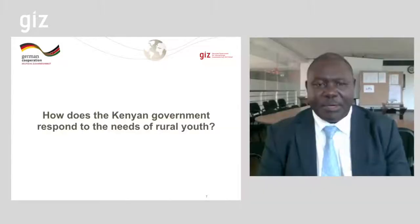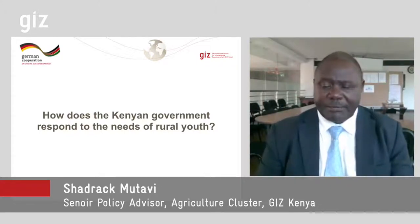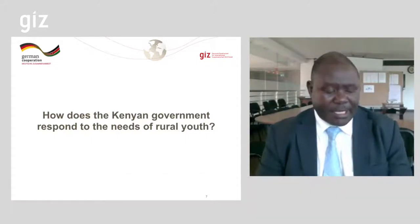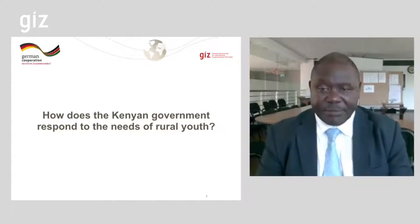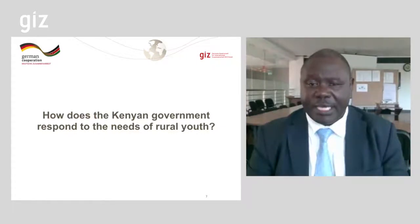We are going to discuss policy issues on how the Kenya government responds to issues related to rural youth in the agriculture sector. The agriculture sector contributes 27% to the gross domestic product, 27% of raw materials required for industry, 65% of export earnings, and 60% of total earnings. 80% of the Kenyan population lives in rural areas where they are involved in agricultural activities.